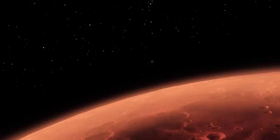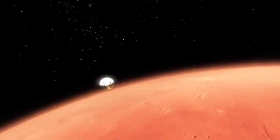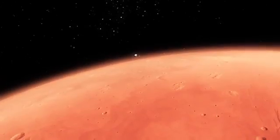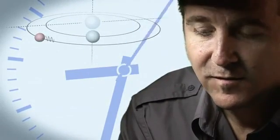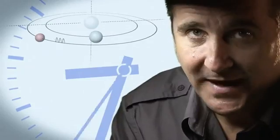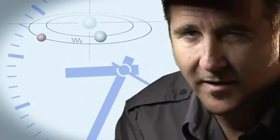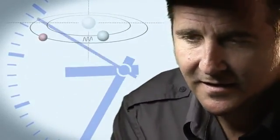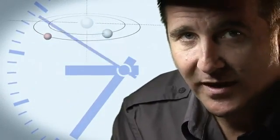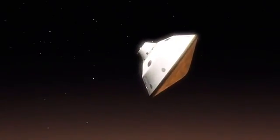The top of the atmosphere down to the surface, it takes us seven minutes. It takes 14 minutes or so for the signal from the spacecraft to make it to Earth. That's how far Mars is away from us. So when we first get word that we've touched the top of the atmosphere, the vehicle has been alive, or dead, on the surface, for at least seven minutes.